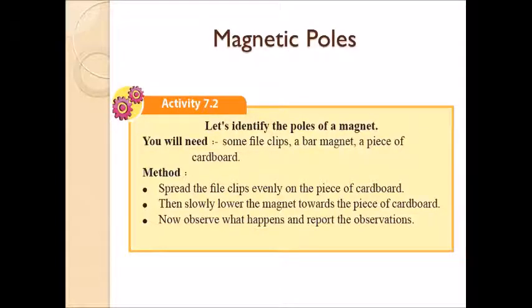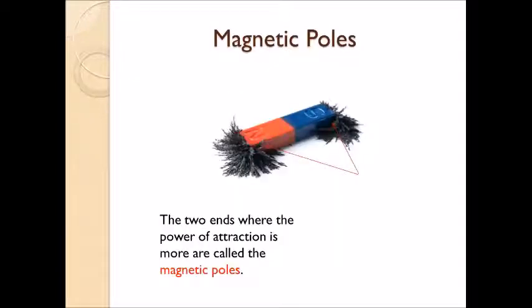What are magnetic poles? By doing the activity 7.2, you can understand whether the materials get attracted equal to each and every spot of a magnet. Here you need some fire clip or iron filings, a bar magnet, a piece of cardboard. First spread the fire clip or iron filings even on the piece of cardboard. Then slowly lower the magnet towards the piece of cardboard.